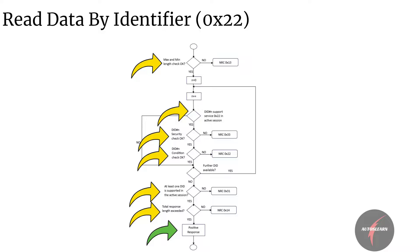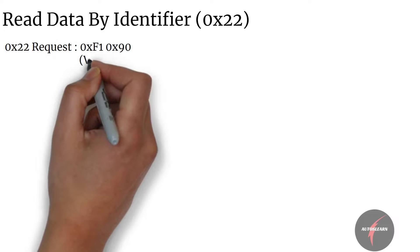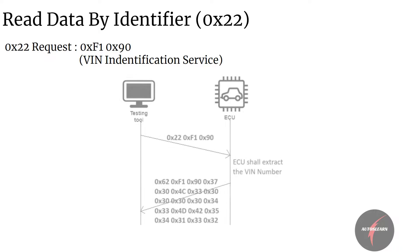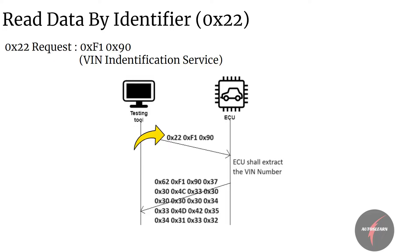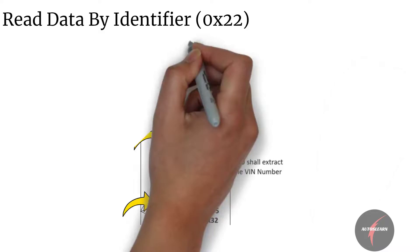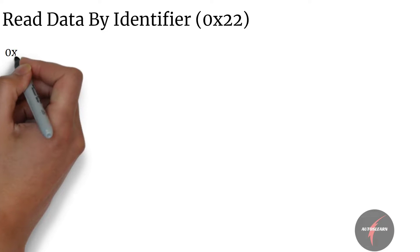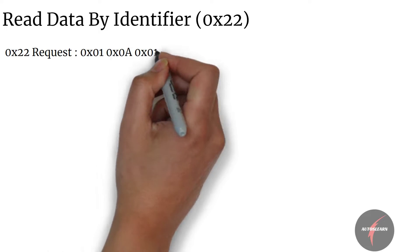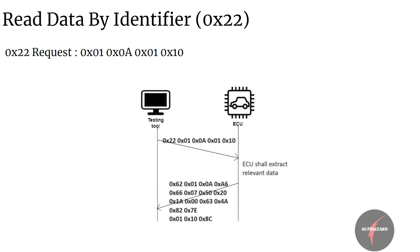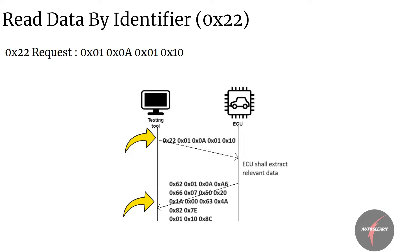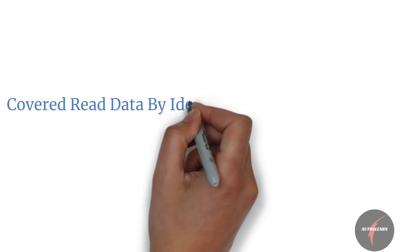In the first example, a single 2-byte data identifier 0xF190 (VIN identification service) is sent by the client. The client request and server response are shown. In the second example, data identifiers 0x010A and 0x0110 are sent simultaneously by the client, and the server responds with data for both identifiers as shown.